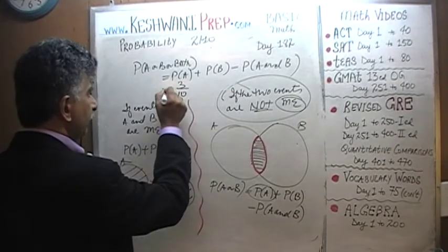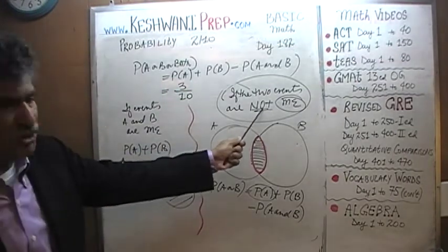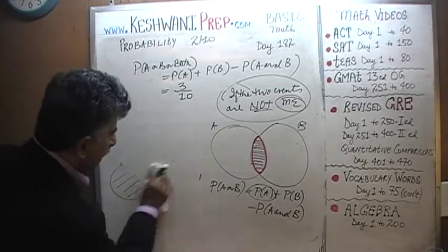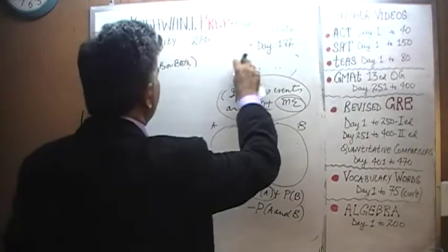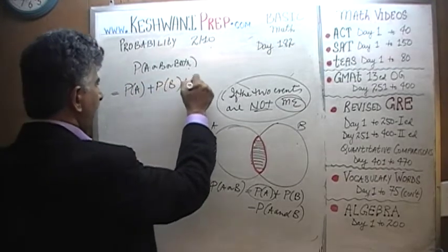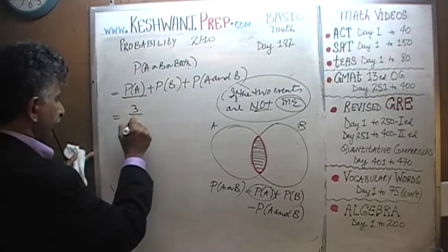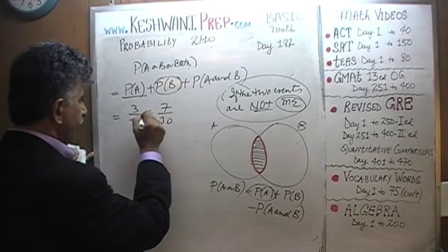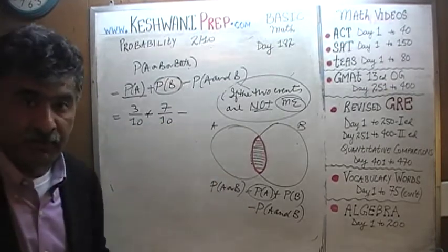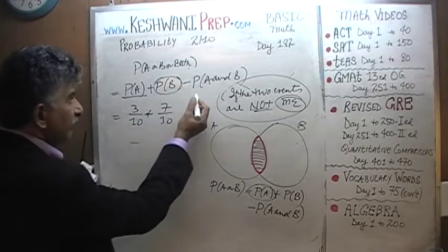The odds of A or B or both happening equals odds of A plus odds of B minus odds of A and B. The odds of A happening is 3 out of 10. The odds of B happening is 7 out of 10. Then minus A and B — we subtract rather than add, because if you added the overlap again instead of double counting you would end up triple counting. So we take away one instance: minus P(A and B).